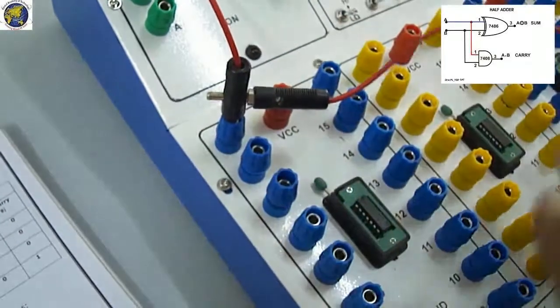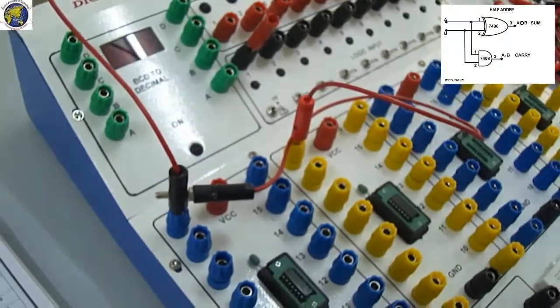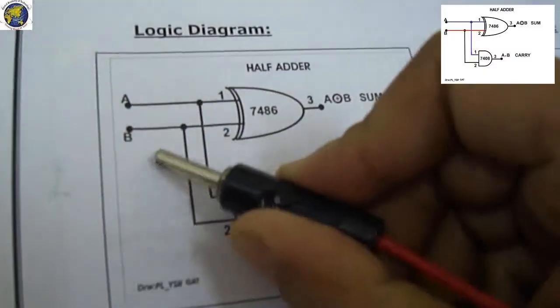Next, 7486 pin number 2 is connected to B, second input. 7486 pin number 2 to B, our second input.